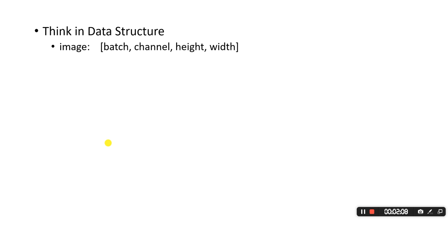For example, when we talk about an image, what comes to your mind should not just be an image — it should be a four-dimensional tensor in PyTorch. The first dimension is the batch, the second is the channel, and then height and width. You have to understand that.